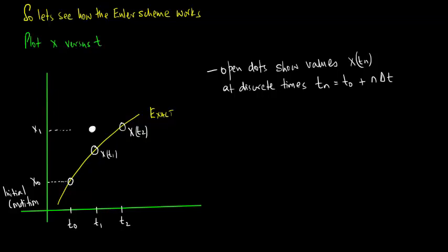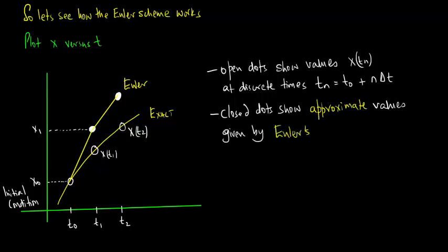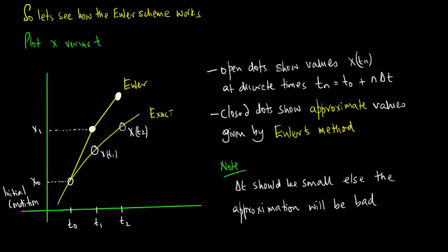We then highlight values from Euler's scheme x1 and x2 and connect the dots. The closed dots show approximate values given by Euler's method. Note that delta t should be small, else the approximation will be bad. This is a simple-minded representation of Euler's numerical scheme for approximating the solution of a differential equation.